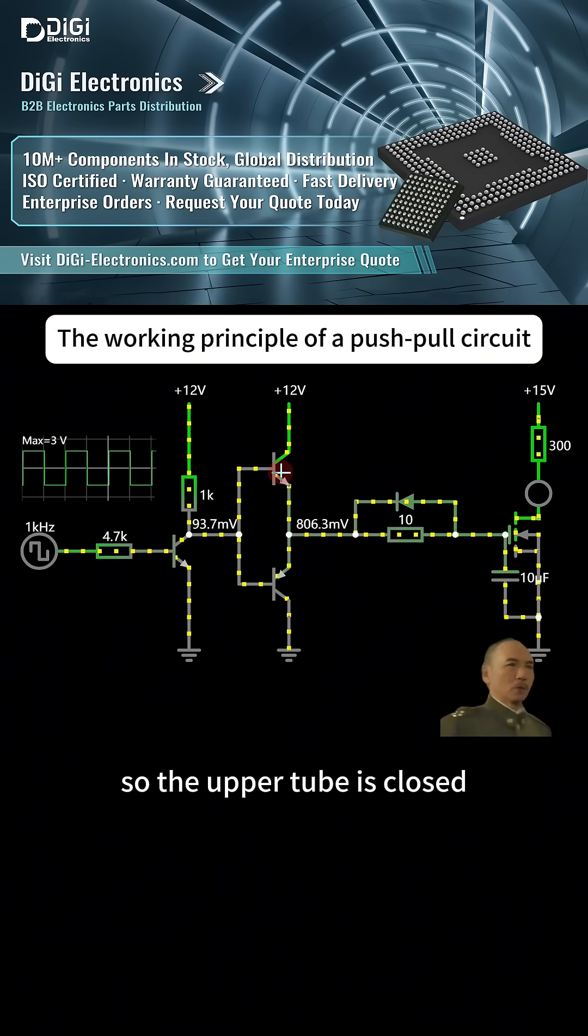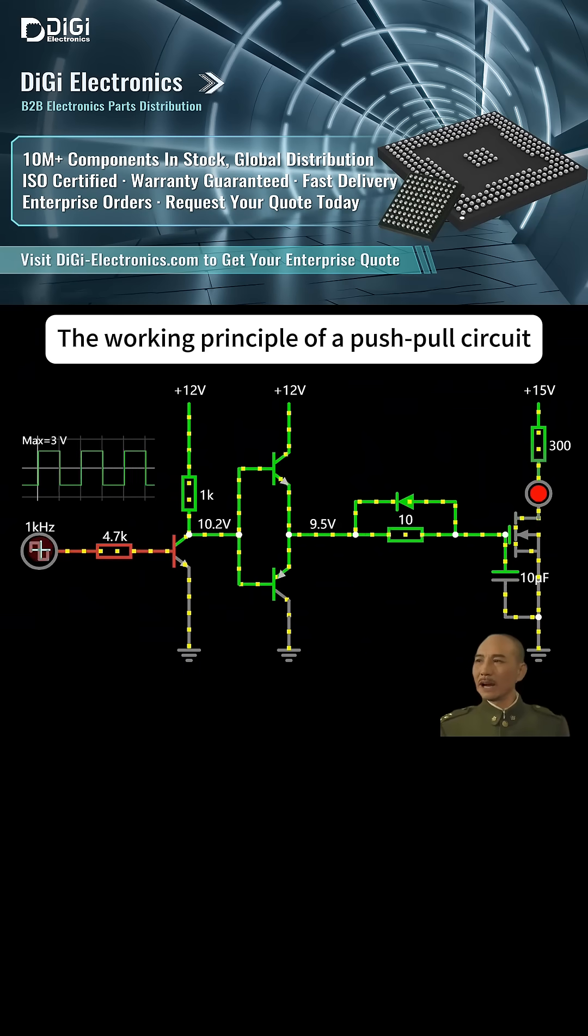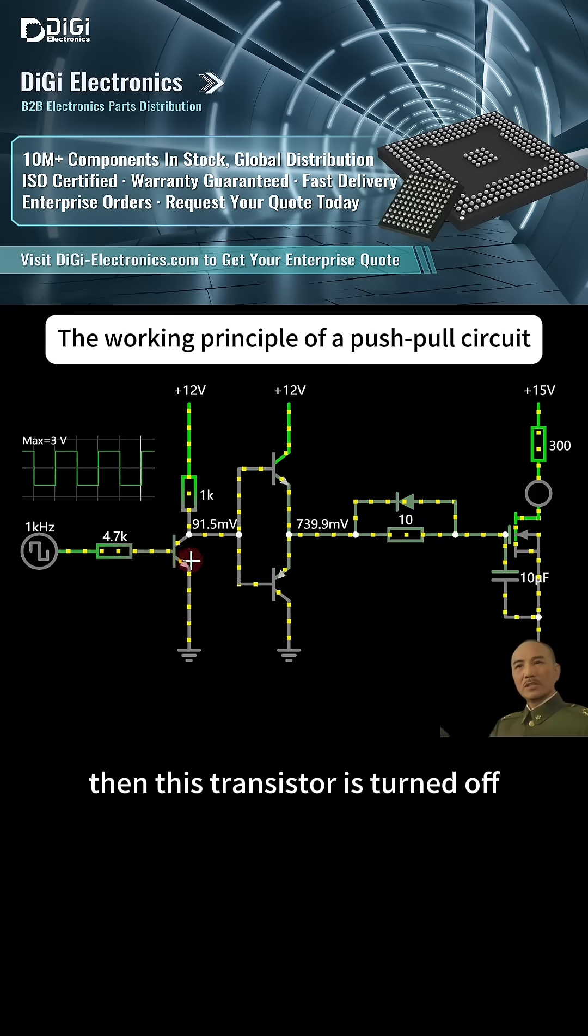So the upper tube is closed. The lower tube is conducting. It goes low here. Then this IGBT will be closed. When the output is low here, then this transistor is turned off.